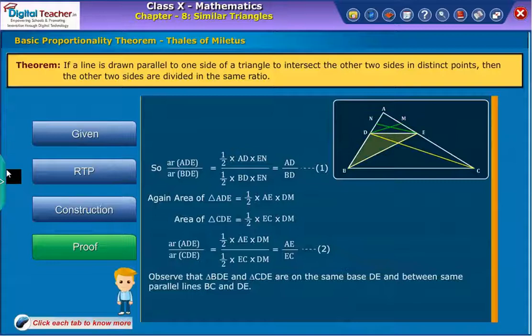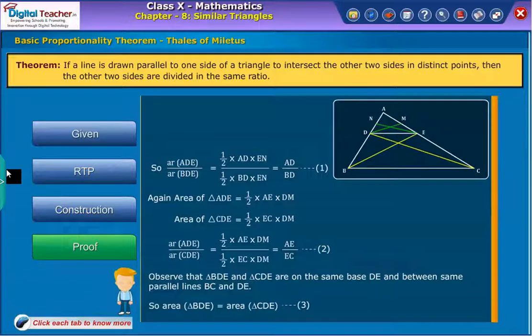Since triangles BDE and CDE are on the same base DE and between same parallels BC and DE, thus area of triangle BDE is equal to area of triangle CDE, which is equation 3.